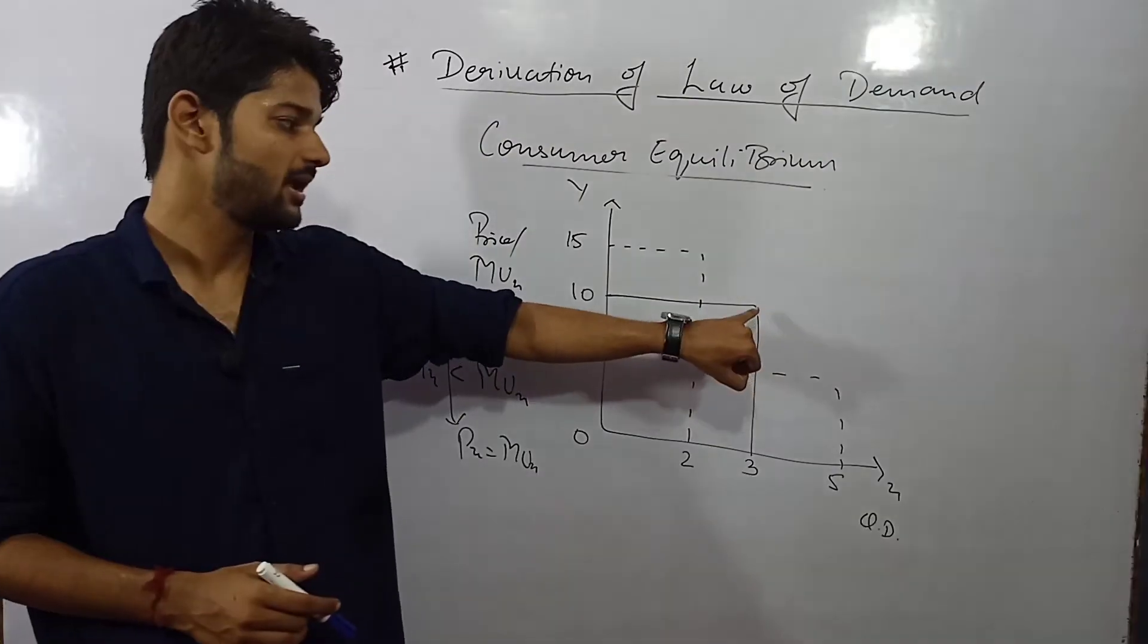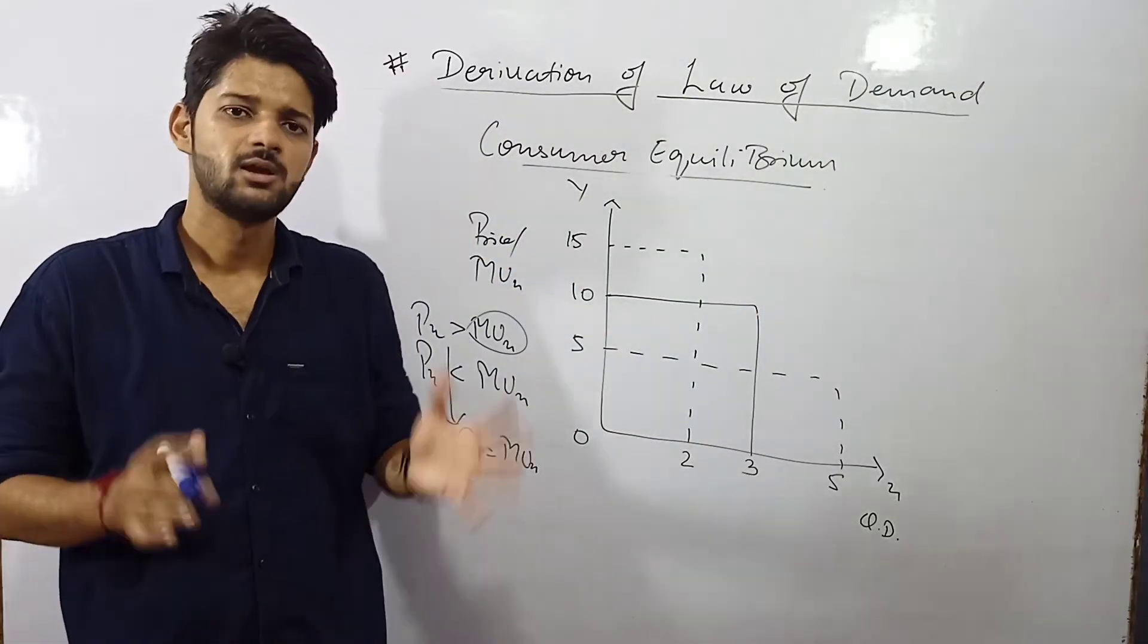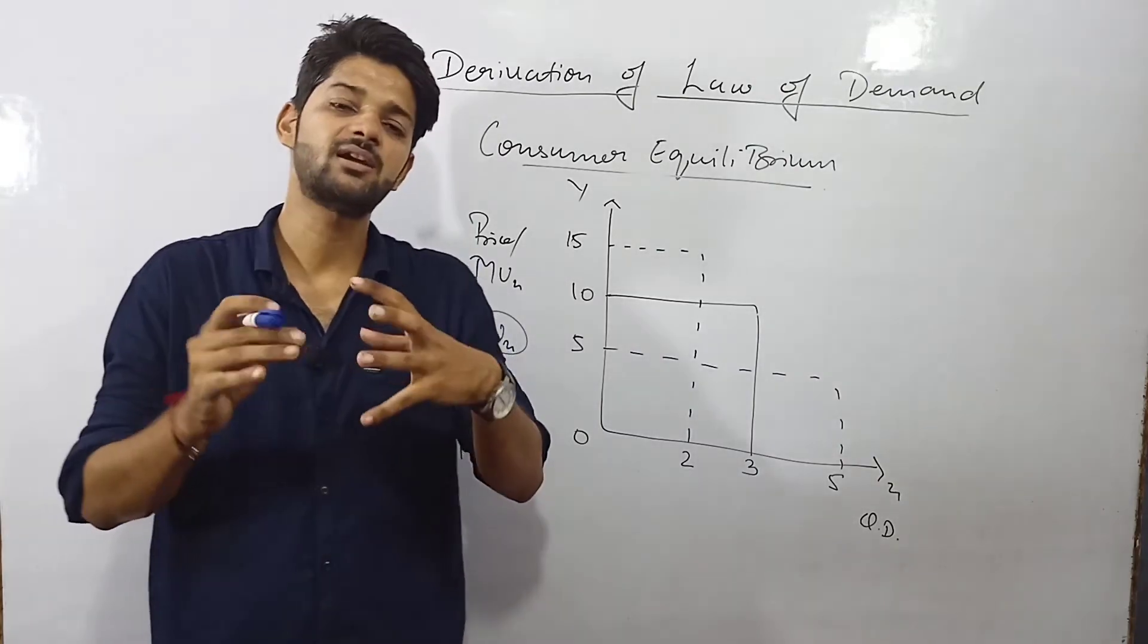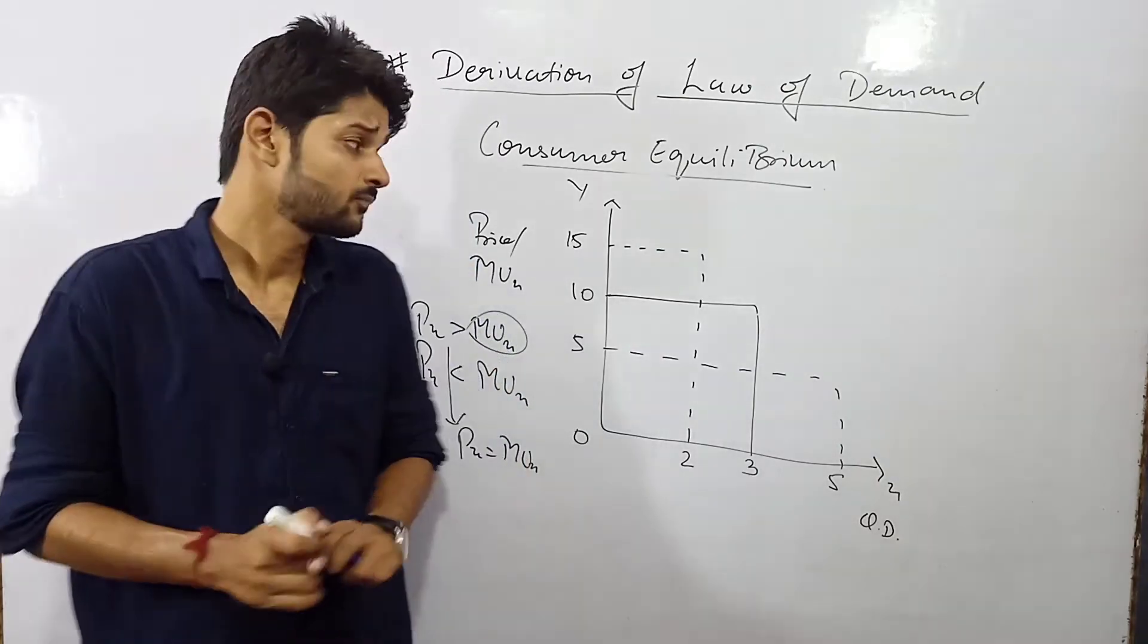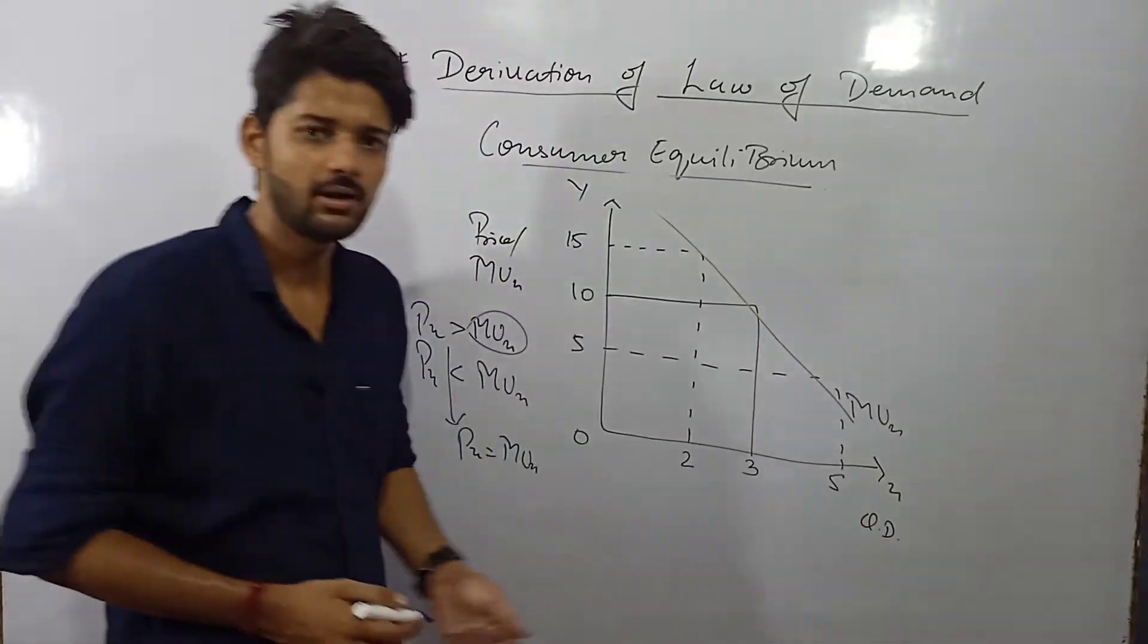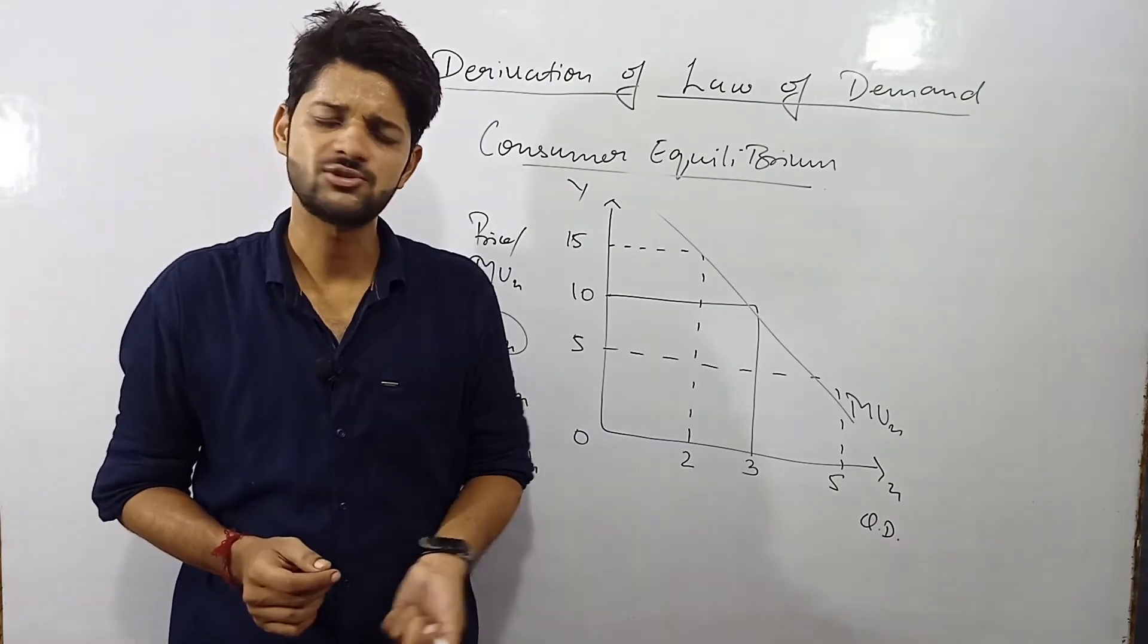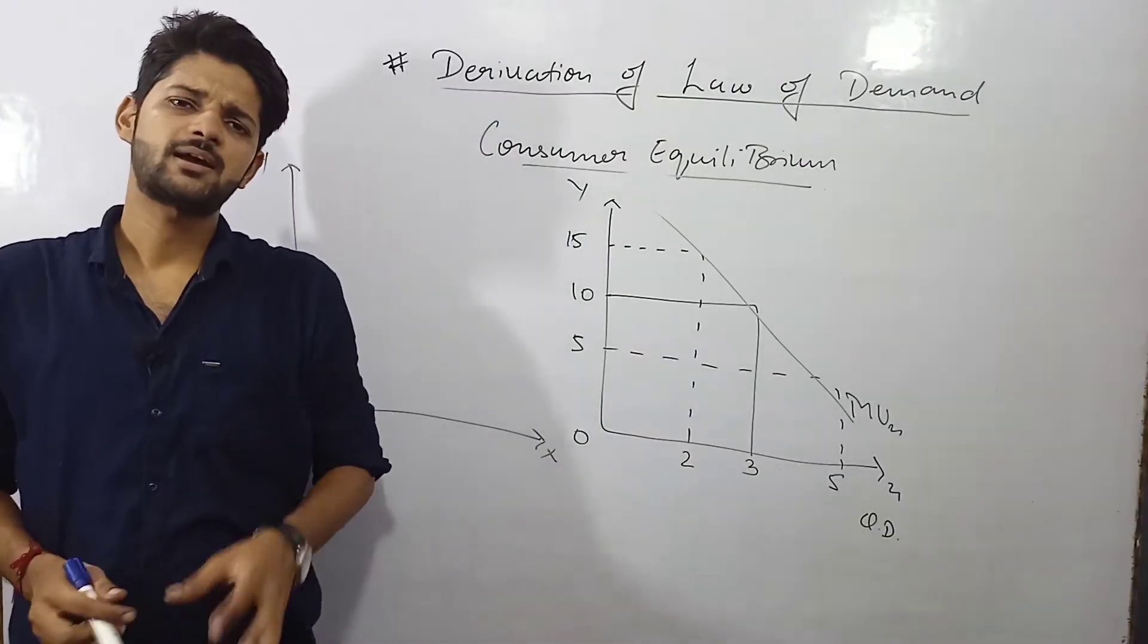This is the scenario where MUX and price are equal. In consumer equilibrium the MUX curve was like this. MU may be 0 also, MU may be negative also and so on.